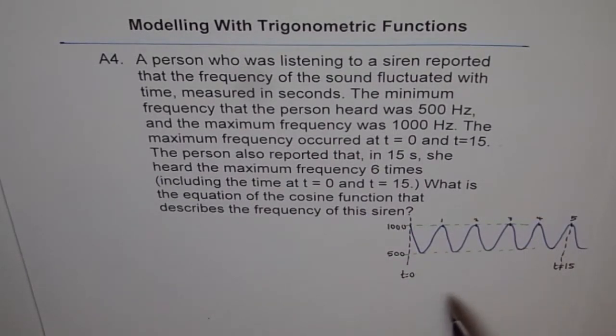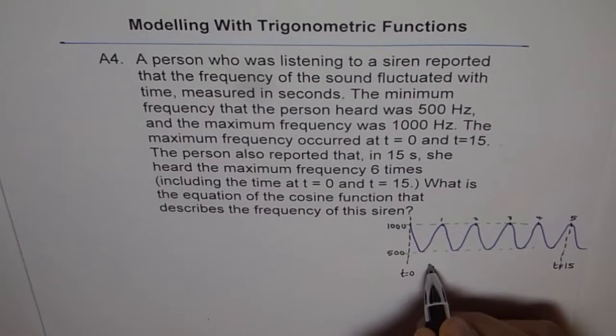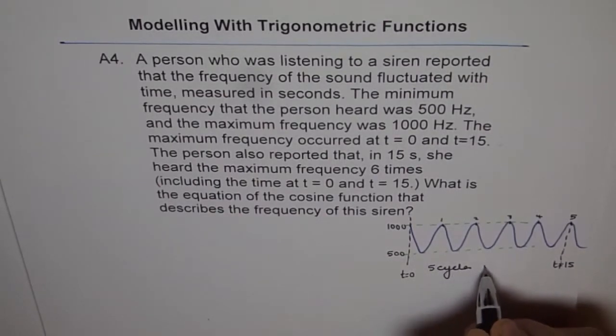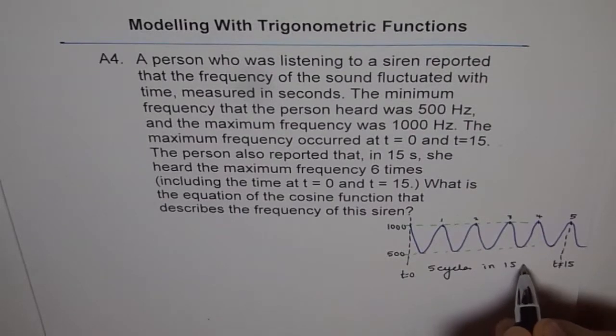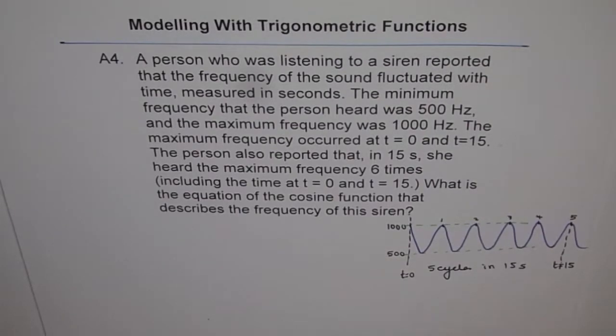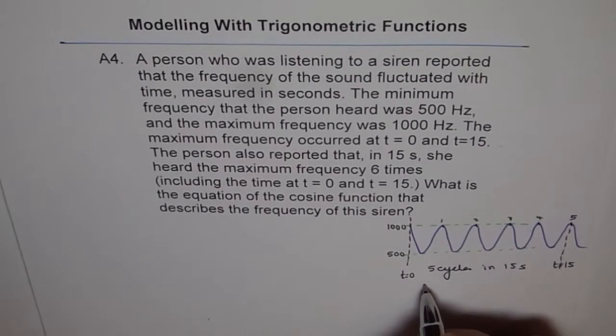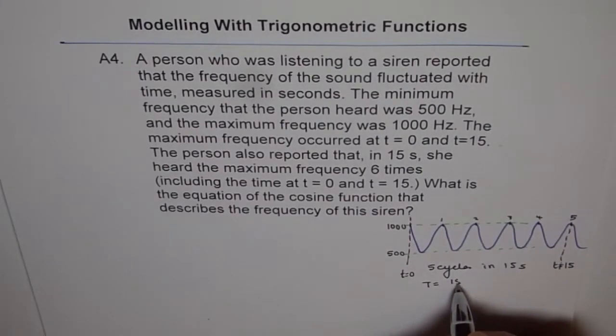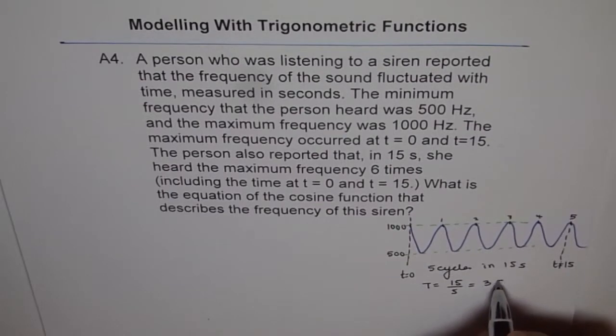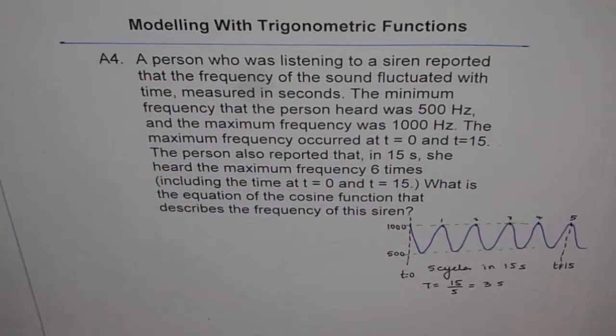So we have 5 cycles in 15 seconds. Do you understand? So we have 5 cycles in 15 seconds. That means what is the time period for 1 cycle? Because many times I have seen students making a mistake here.